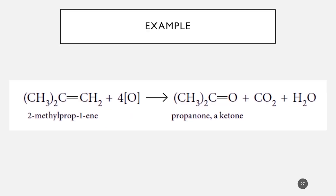For example, with 2-methylprop-1-ene, the double bond is at the end of the compound. One carbon is attached to two hydrogens, and the other is attached to alkyl groups. So the carbon attached to the methyl groups will form a ketone, and the terminal carbon will form carbon dioxide.